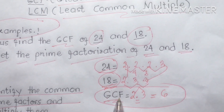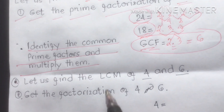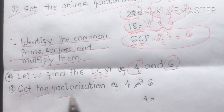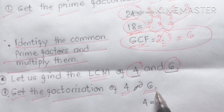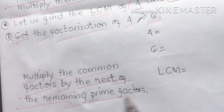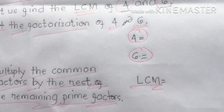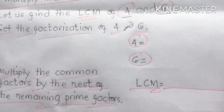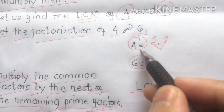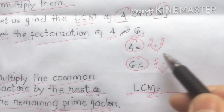Next we're going to find the LCM, or Least Common Multiple, of 4 and 6. We get the prime factorization of both numbers. We then multiply the common factors by the remaining prime factors. Let's start with 4: the factor is 2 × 2. For 6, the factor is 2 × 3.